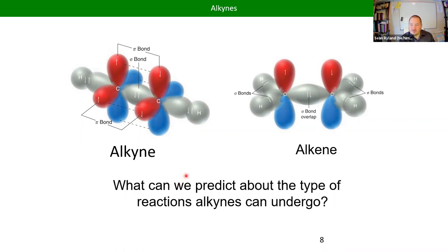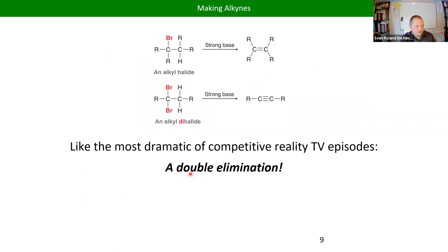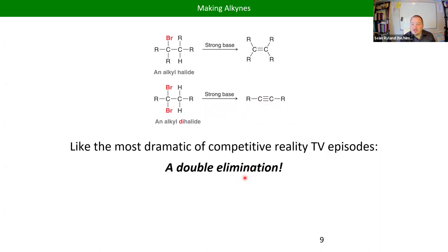The way we make alkynes is very similar to making alkenes: we use elimination reactions. If we wanted to make an alkene, we'd need an alkyl halide and do an elimination. If we have a dibromide, we can do a double elimination — it's just doing the same elimination twice. The stronger the base, the more we can favor the products. Beyond that, there's nothing new about this elimination.